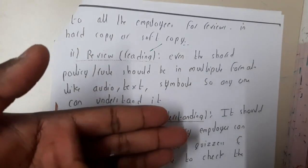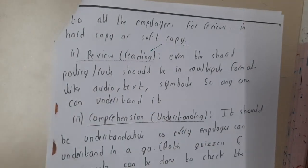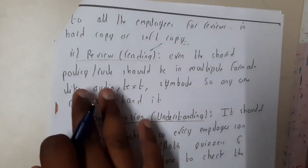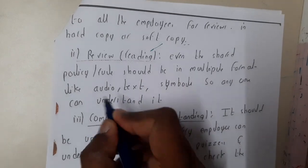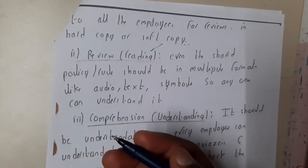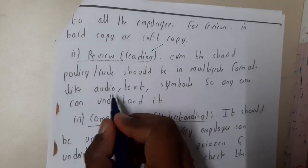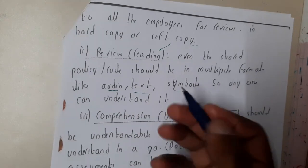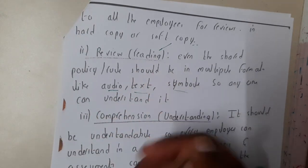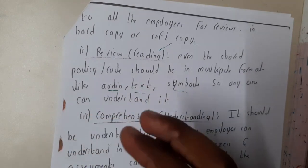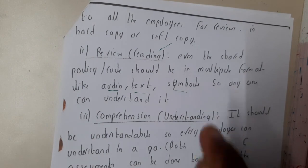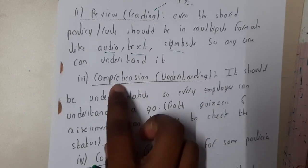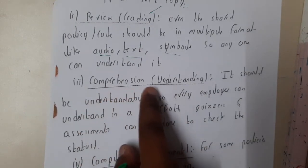The next criterion is review, which means reading. All organization users should be able to read the policy and give their review. The shared policy should be available in multiple formats — audio format for those who cannot read, text format for others, and symbol format for some — because you need to inform this data to each and every member of your organization.